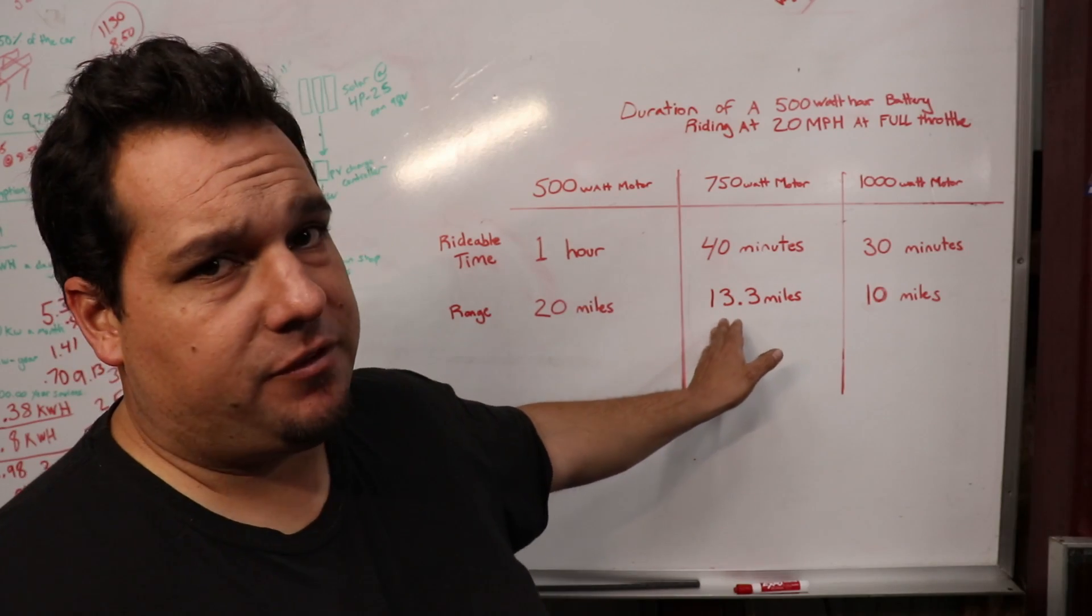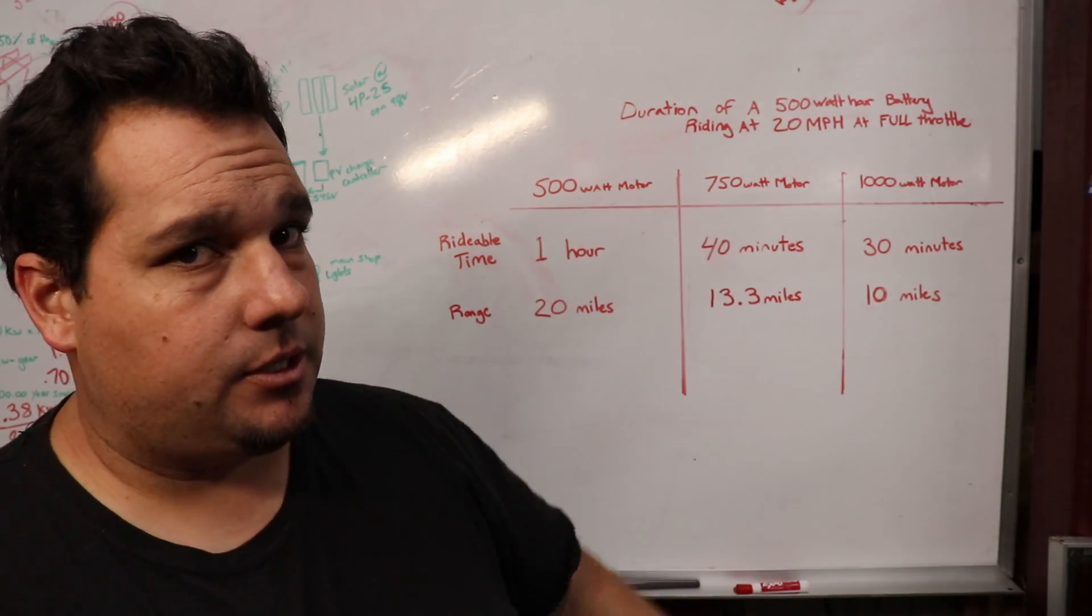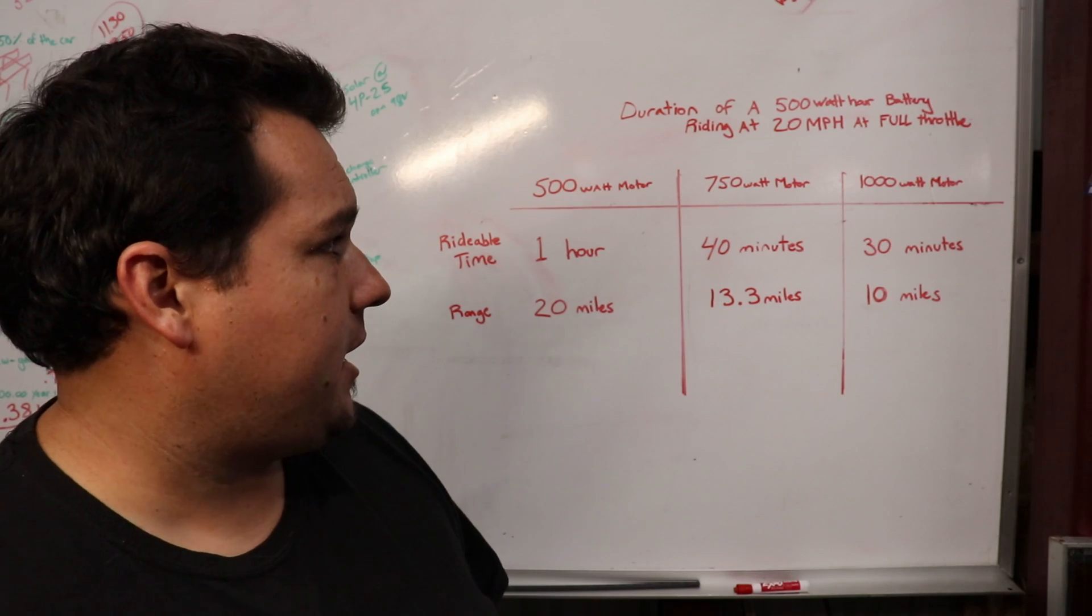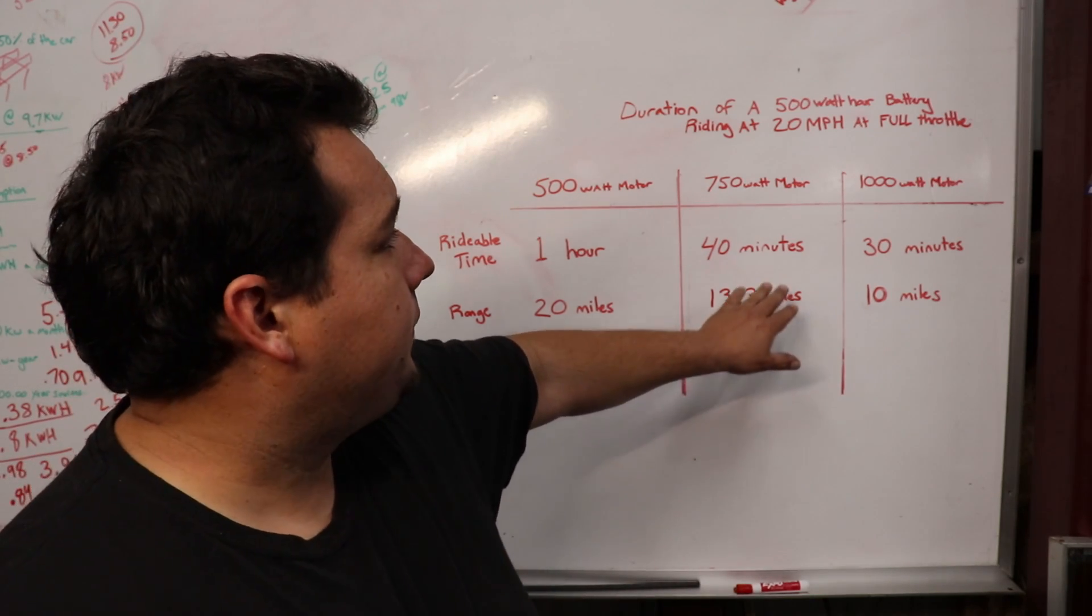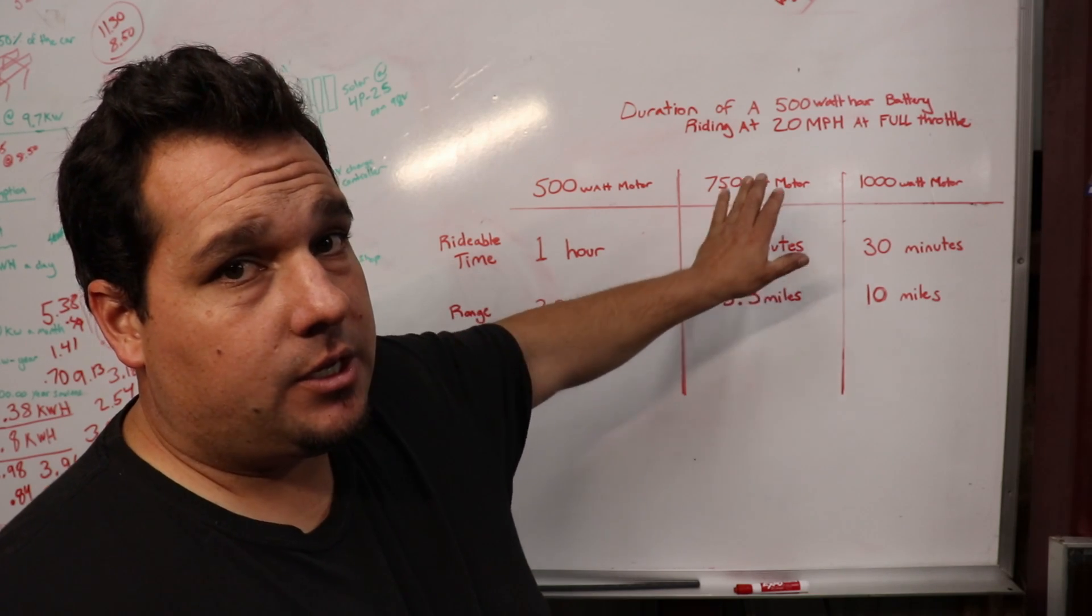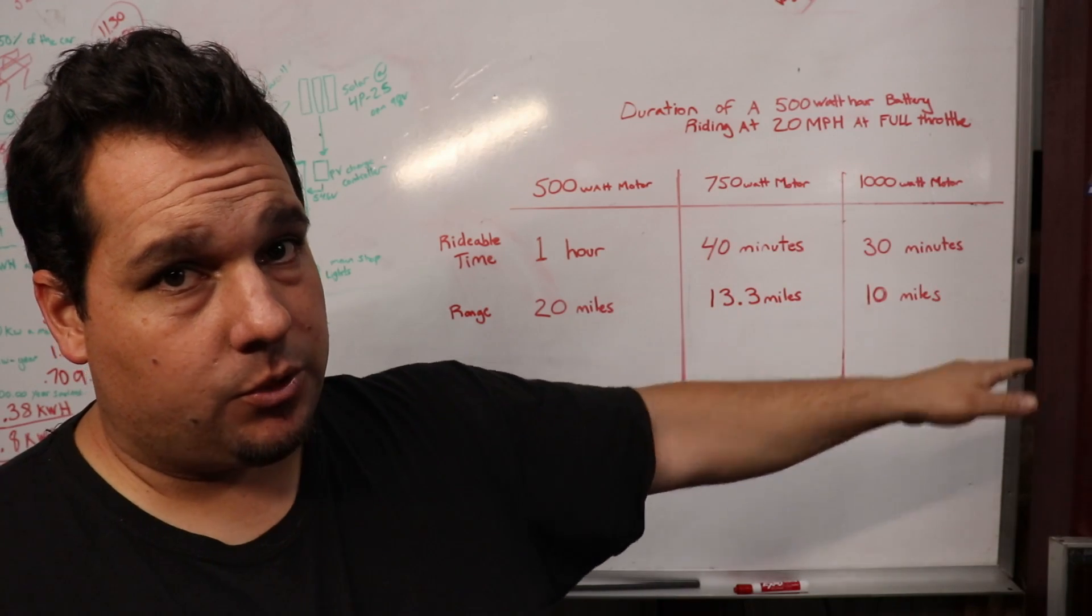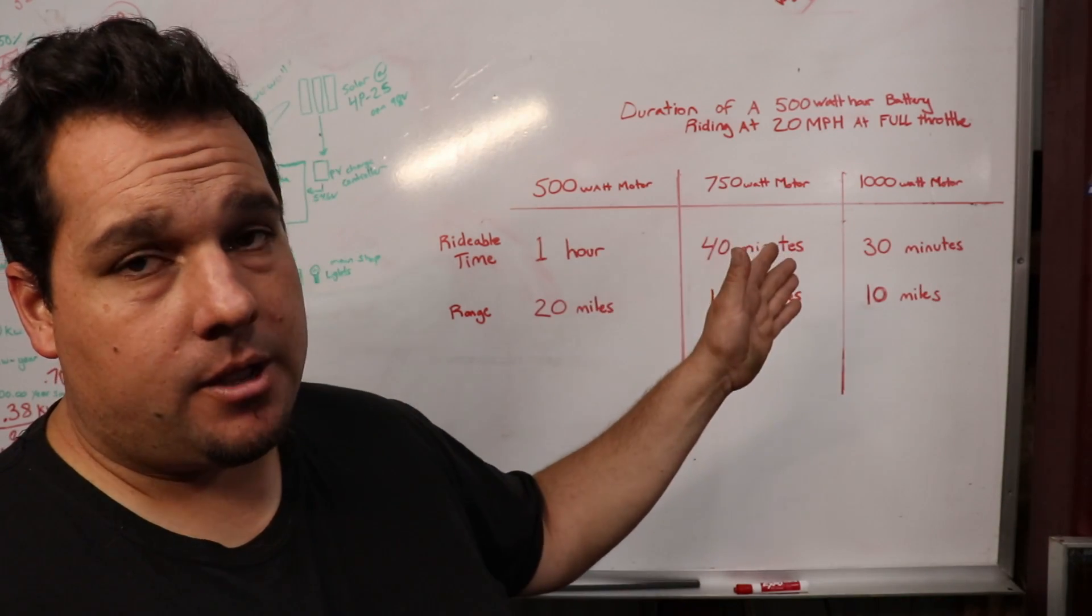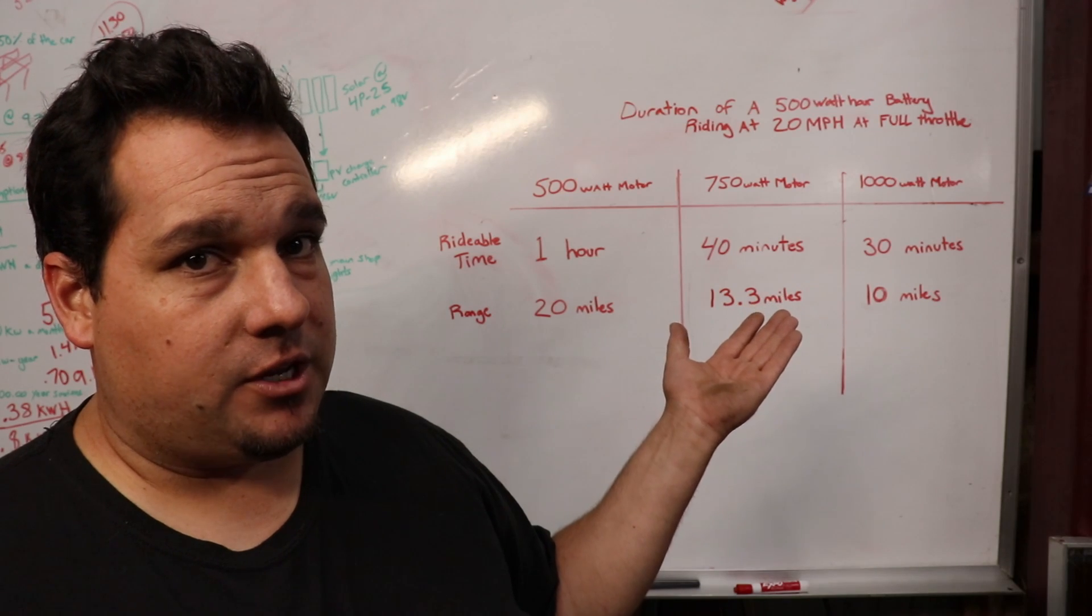So keep in mind, 750 on up is pretty much a hot rod of an e-bike. And also here in the United States, 750 watts on the streets is the legal limit for power. Otherwise, you're getting into an off-road area, which could limit some of us if we're living in cities or whatnot.